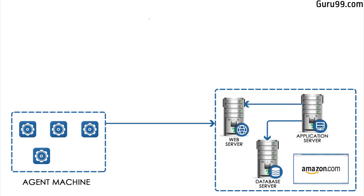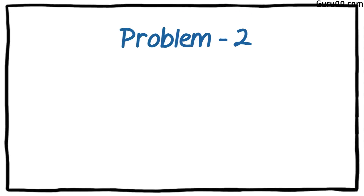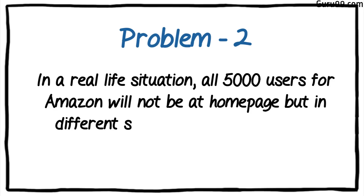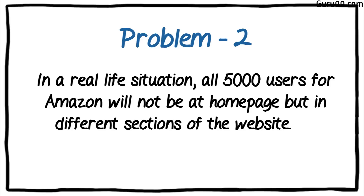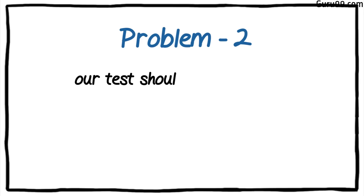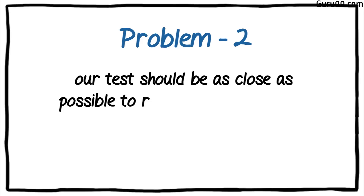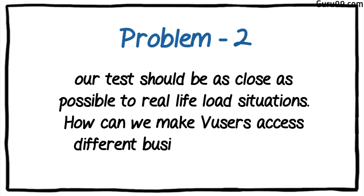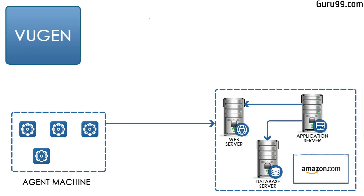Virtual users emulate real user behavior and help overcome resource limitations by replacing testers with virtual users. Problem 2: In a real-life situation, all 5,000 users for Amazon will not be at the homepage, but in different sections of the website. To make load testing effective, our tests should be as close as possible to real-life load situations. How can we make VUsers access different business processes? The solution is VU Gen.